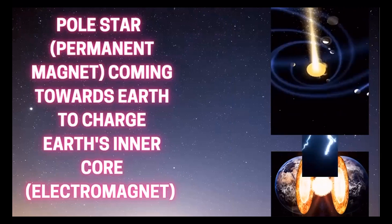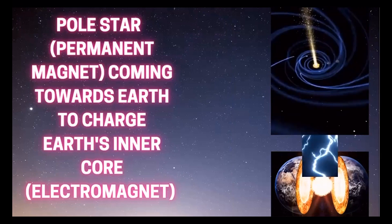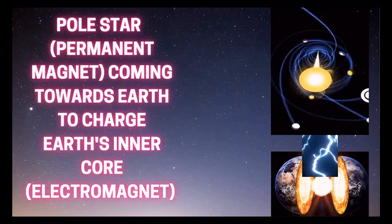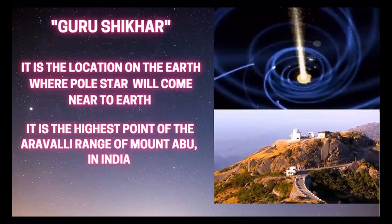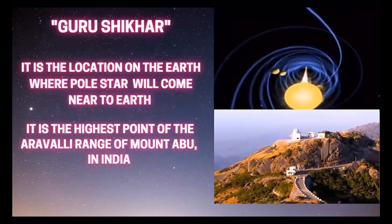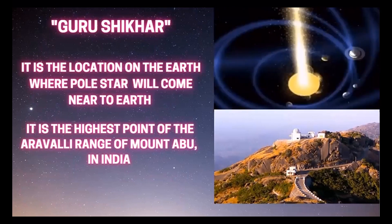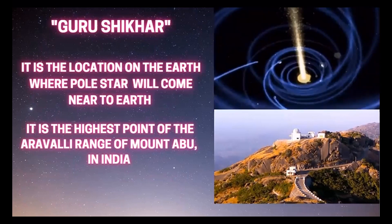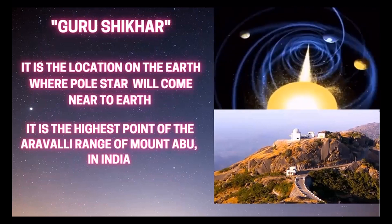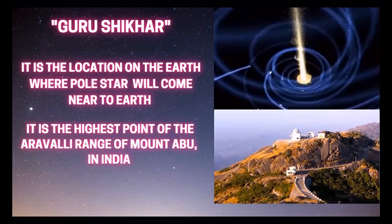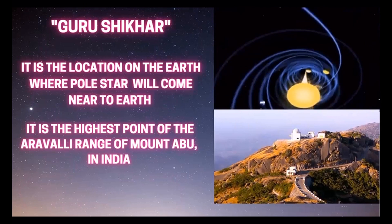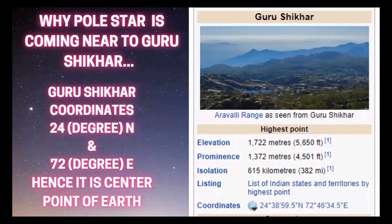The point on Earth where Polestar will come very near is Guru Shikha — a location on Earth where Polestar will come closest. It is the highest point of the Aravalli range, Mount Abu, in India. The coordinates of Guru Shikha are 24 degrees north and 72 degrees east.